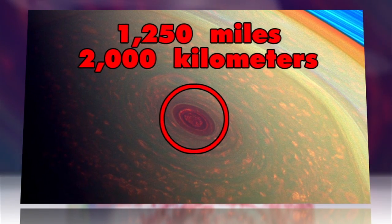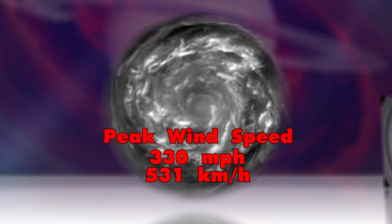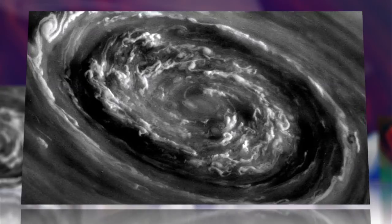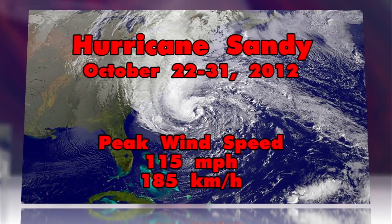With an eye measuring more than 1,200 miles wide and winds spinning counterclockwise at 330 miles per hour, this monster could dwarf any storm on Earth.